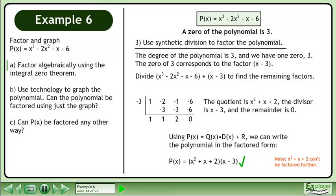Using P(x) = Q(x) × D(x) + R, we can write the polynomial in the factored form P(x) = (x² + x + 2)(x - 3).